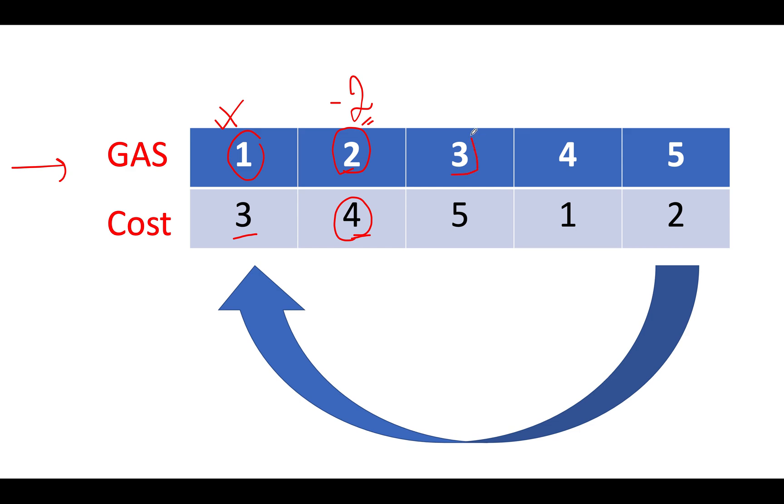Let's proceed ahead. We have 3 as the gas value and the cost for moving on to the next station is 5. So if we are starting our journey from this particular index, then again, it's not possible for us to complete the entire gas stations because it's not possible to move on to the next immediate gas station. So how can we mathematically state it? If my gas minus cost happens to be negative, then it's not possible.